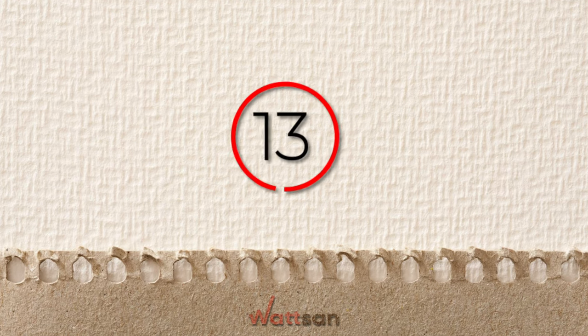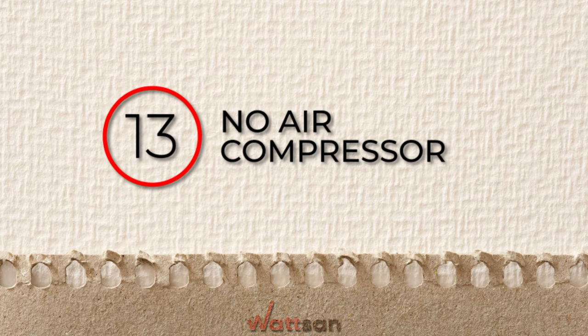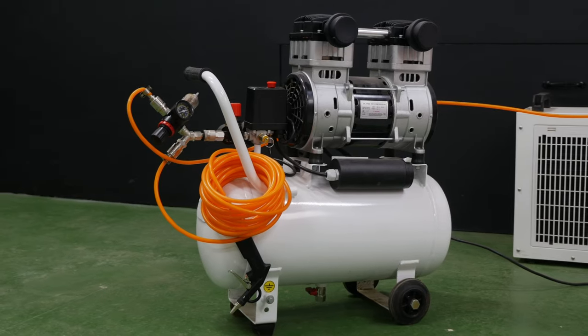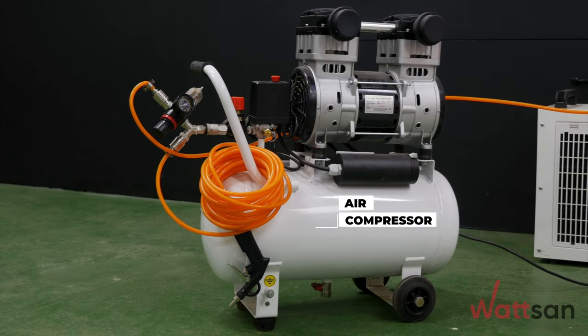The next point is 13. No air compressor. An air compressor is used to cool the lens and blow the combustion products out of the cutting zone.